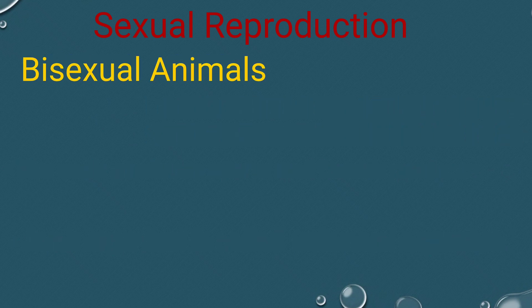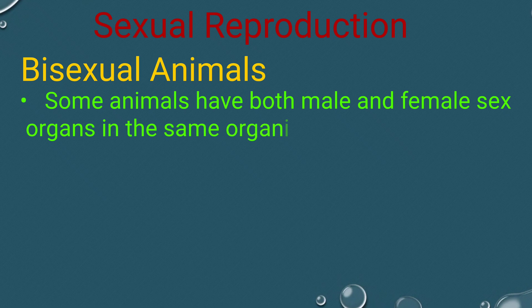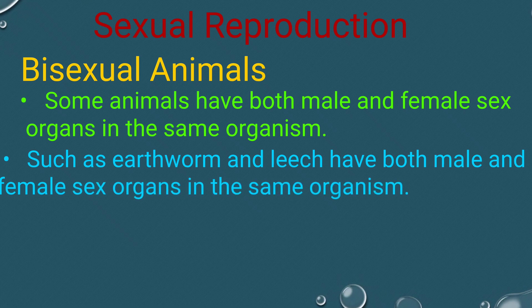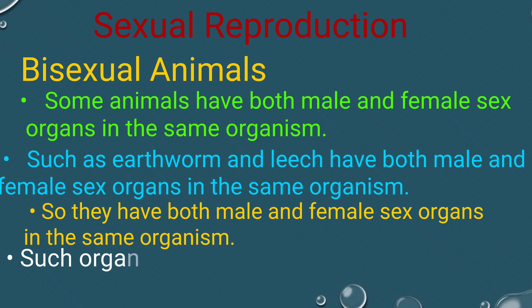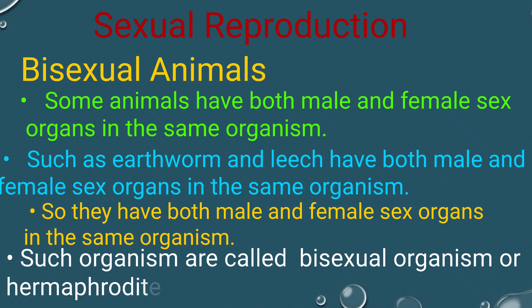Bisexual Animals. Some animals have both male and female sex organs in the same organism, such as earthworm and leech. Such organisms are called bisexual organisms or hermaphrodites.